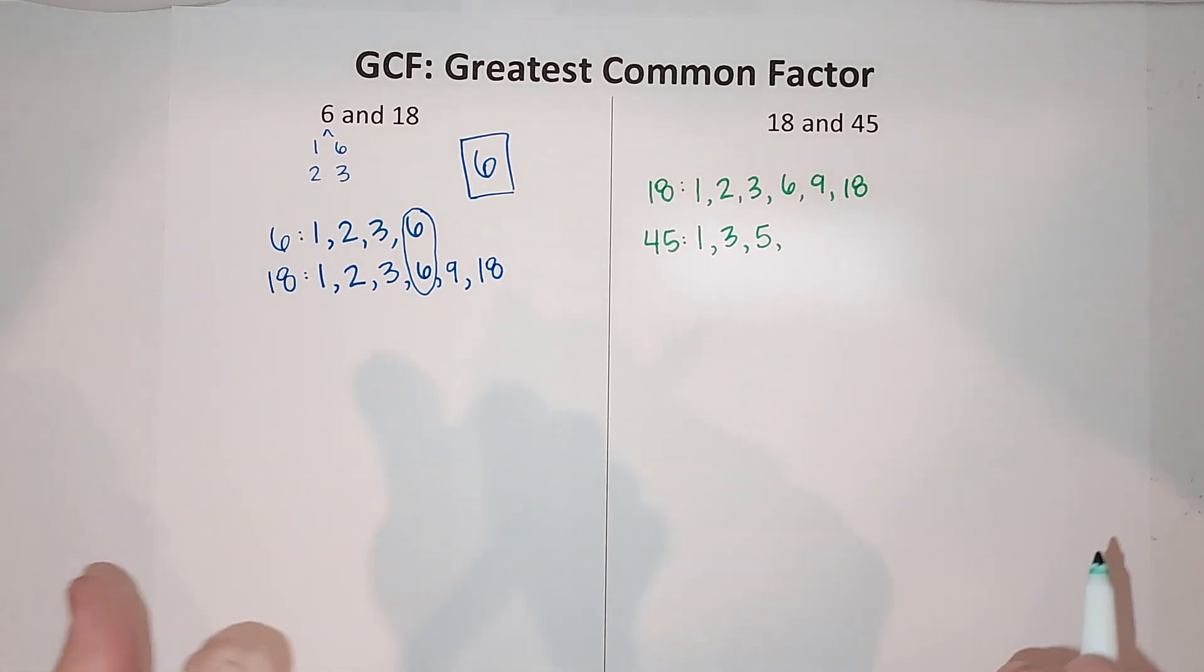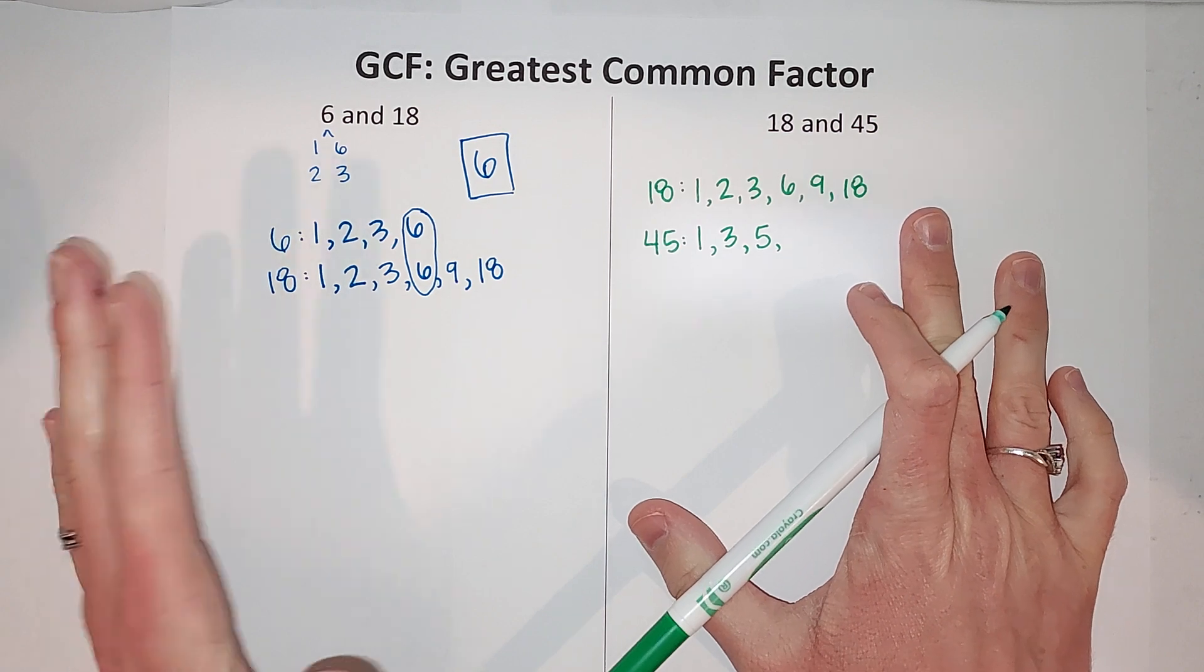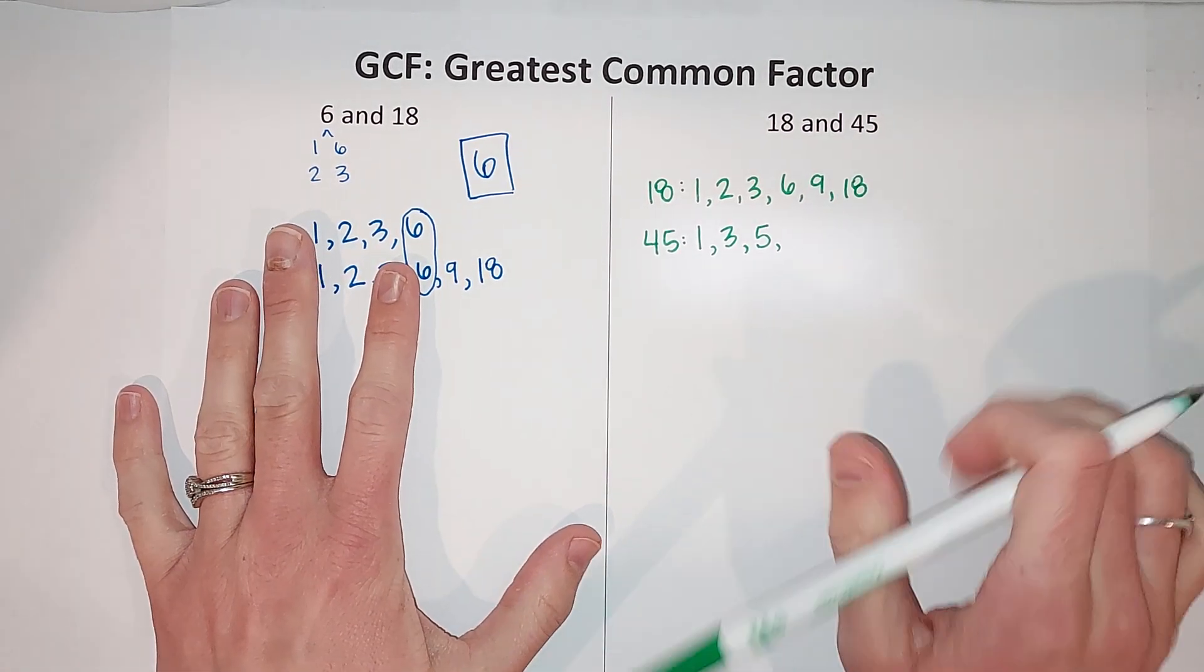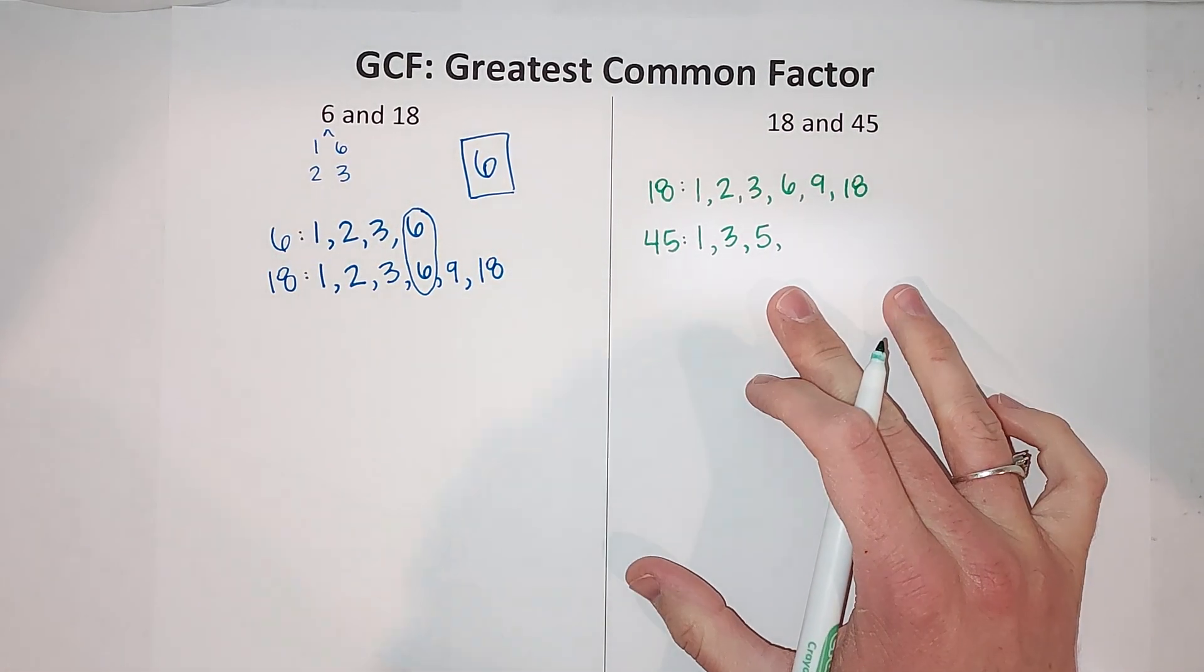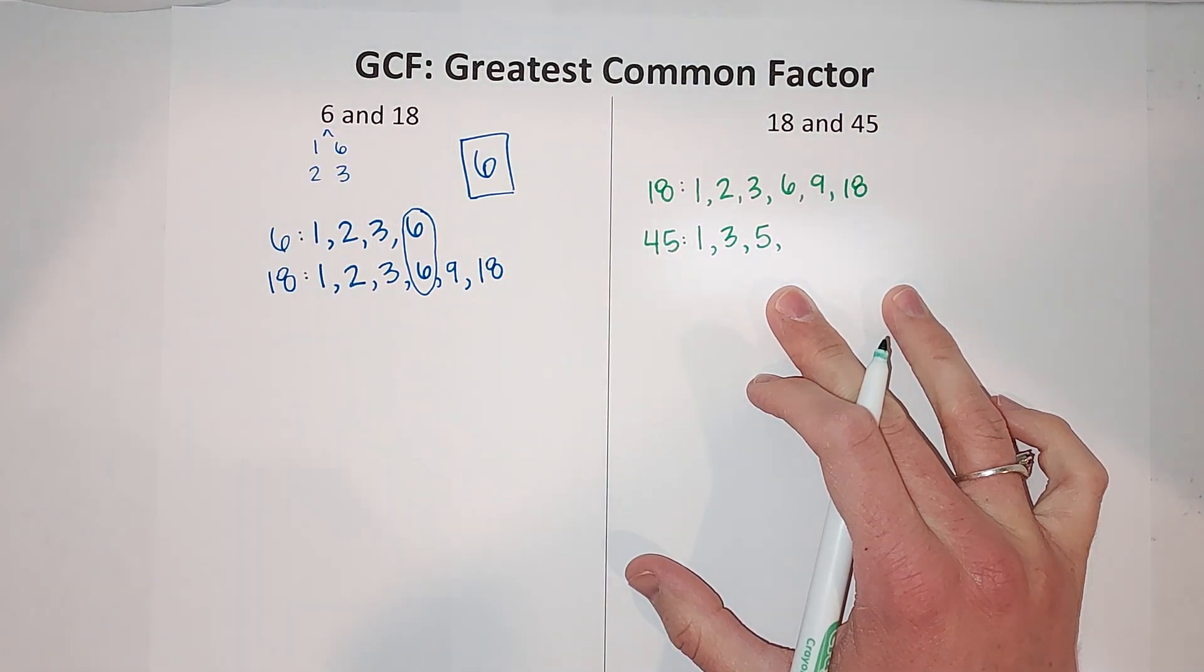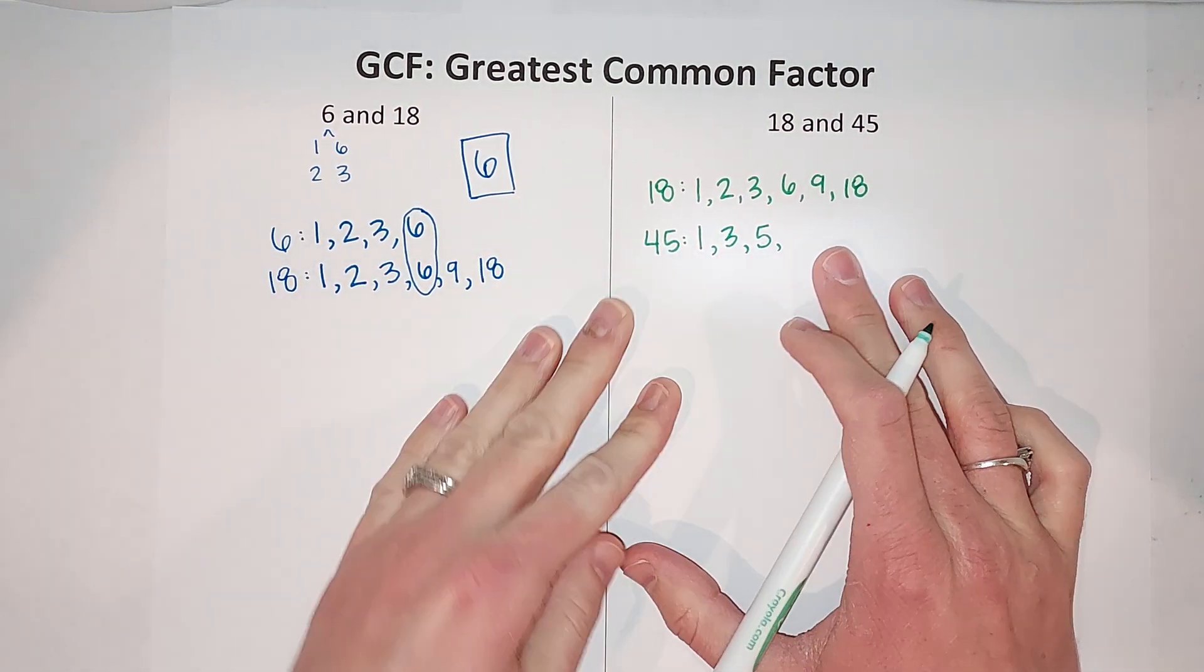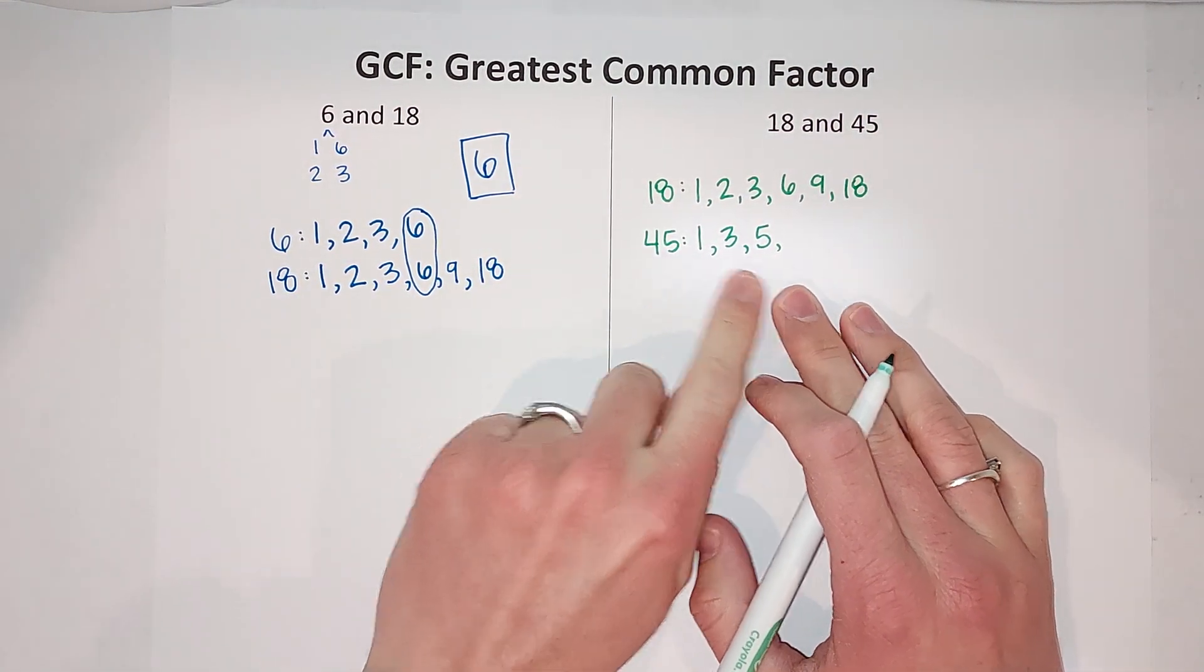If you don't know your multiplication problems super well, it's a good thing to practice, but also if you're allowed a calculator, just do 45 divided by 6. If it comes with a whole number then you're good, if it's a decimal then no. We're just looking for whole number factors.